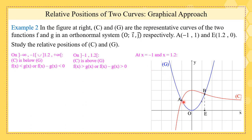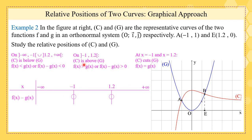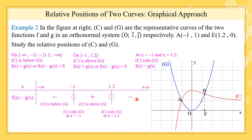When X is exactly negative 1 or exactly 1.2, the two curves intersect, so F of X equals G of X. This is the study of relative positions. It can also be expressed in a table: F of X minus G of X is negative on minus infinity to minus 1, positive between minus 1 and 1.2, and negative between 1.2 and plus infinity. So C is below, then cuts, then above, then cuts, then below.